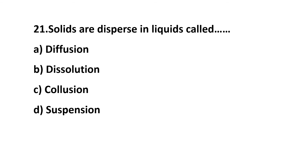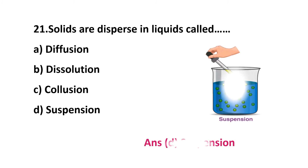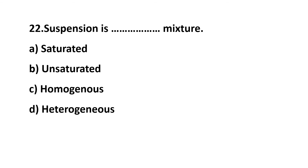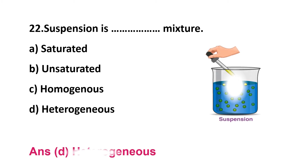Question 21: solids dispersed in liquids are called — diffusion, dissolution, collusion, or suspension. The correct answer is option D: suspension. The process where solids are dispersed in liquids is known as suspension. Question 22: suspension is a __ type of mixture — option A: saturated, option B: unsaturated, option C: homogeneous, option D: heterogeneous. The correct answer is option D: heterogeneous mixture.